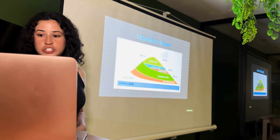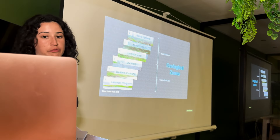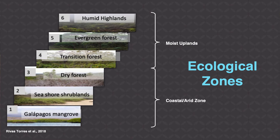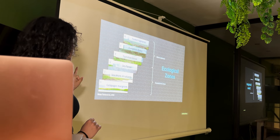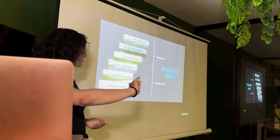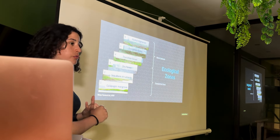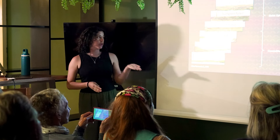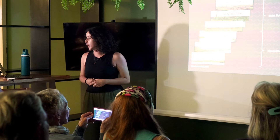The vegetation zones can be grouped into three main zones: the coastal zone, the arid zone, and the moist uplands. We'll go from the Galapagos mangrove all the way to the humid highlands. The Galapagos mangrove ecosystem is characterized by dry weather, low precipitation, and salt water adaptations.